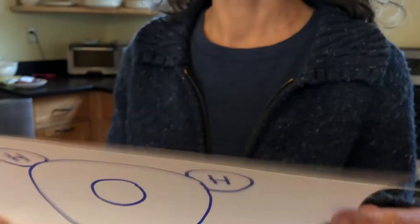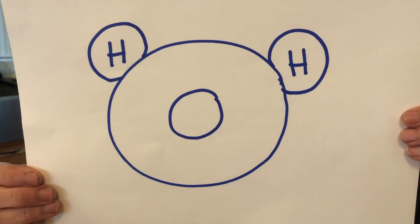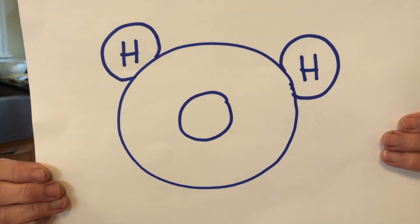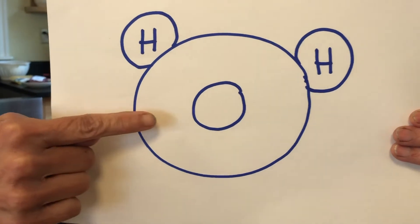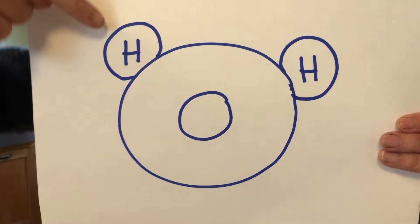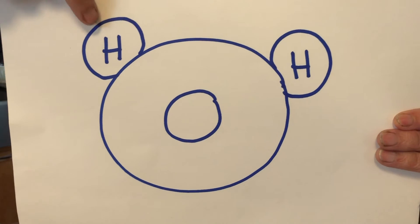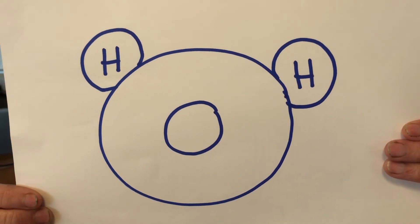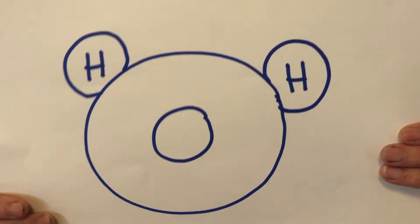Now the reason this happens is the structure of water looks a little bit like this. It looks kind of like Mickey Mouse, doesn't it? So the big circle here is an oxygen atom and these two ears are hydrogen atoms. That's what water is made of: hydrogen and oxygen, H2O.